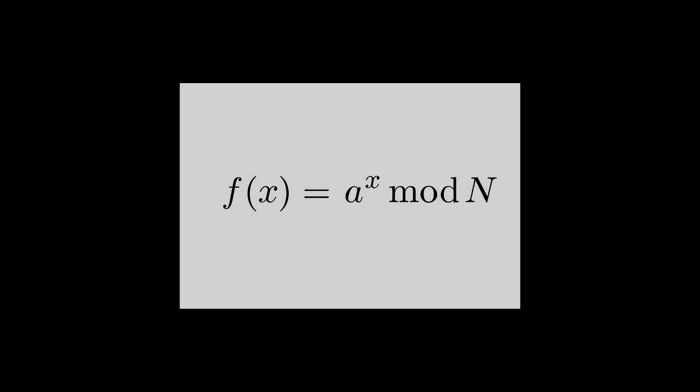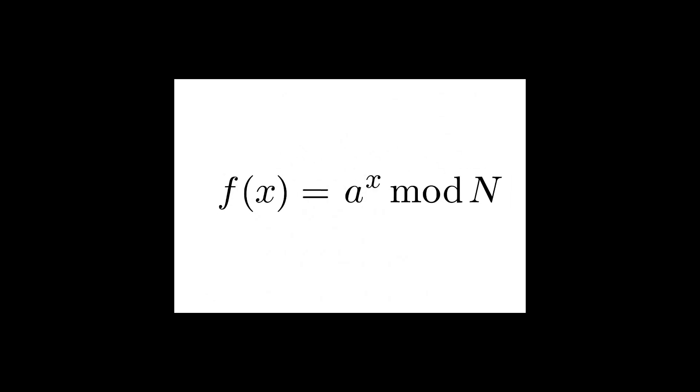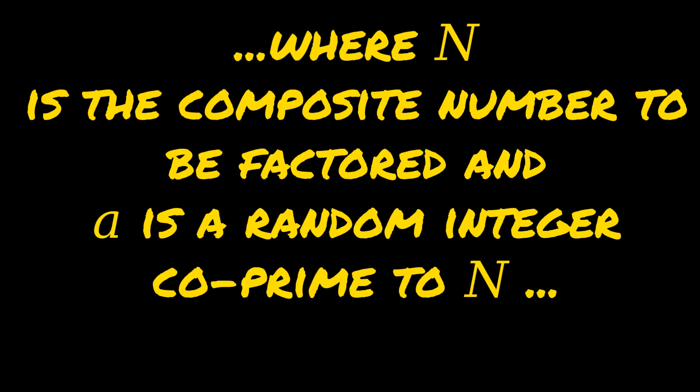The most important step is a quantum Fourier transform. Suppose you're trying to factor a number n — you can show that if you can find the period of the sequence a to the x mod n, so that's a, a-squared mod n, a-cubed mod n, a-fourth mod n, dot dot dot, then you can factor n.